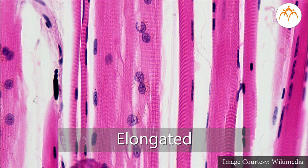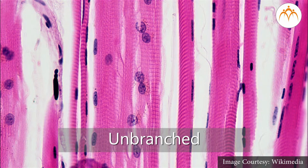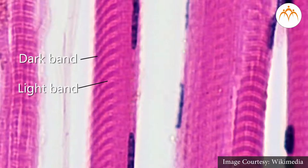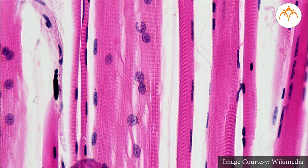Striated muscle fibers are elongated with an average length of three centimeters. These are unbranched. Dark and light bands are alternately present on the muscle fibers — these are called striations. These muscles are subjected to fatigue rapidly and hence cannot show activity for a long time.